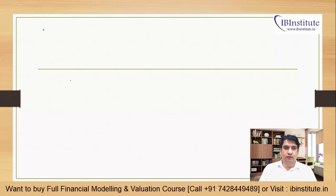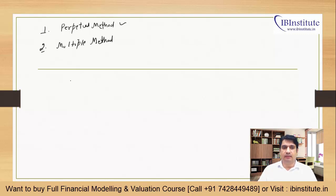The first method is the perpetual method and the second is the multiple method. The perpetual method is dependent on the Gordon Growth Model, which states that P0 is equal to D1 upon R minus G.